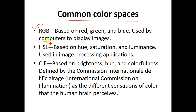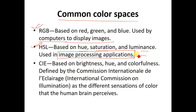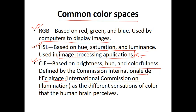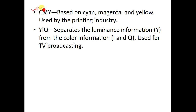RGB is mainly used by computers to display images. Similarly, we have the HSL model where we have hue, saturation, and luminescence, and it is used for image processing applications. Then we have the CIE model with brightness, hue, and colorfulness, defined by the Commission Internationale de l'Éclairage — in English, the International Commission on Illumination — which defines how the different sensations of colors are perceived by the human brain. Then we have the CMY model with cyan, magenta, and yellow, used by the printing industry, and it is a secondary model associated with the RGB model.